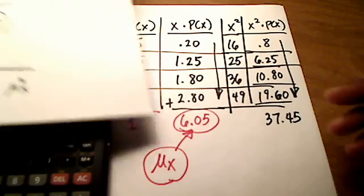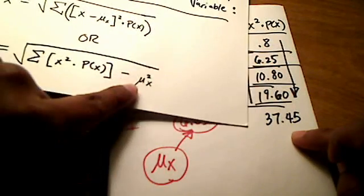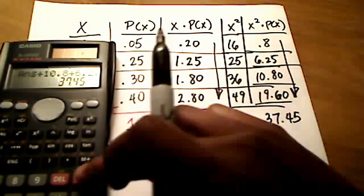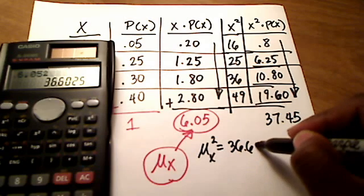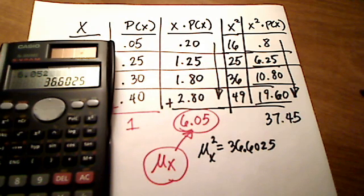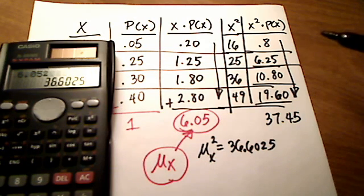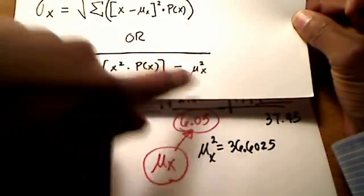That's not our final answer. Now that I've got this sum of 37.45, I have to subtract the mean squared. I have the mean — 6.05 — but I need to square it: 6.05 squared is 36.6025. I am not going to round any of those numbers and will leave them as they are. I'm not going to round until the very, very end.